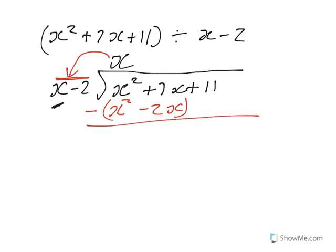We take that x and multiply it by all of x minus 2: x times x is x squared, x times minus 2 is minus 2x. We subtract all of that: x squared minus x squared is nothing. Then minus 7x — a minus and a minus is a plus — so that's plus 2x. 7x plus 2x is 9x. Now we bring that 11 down next to it.